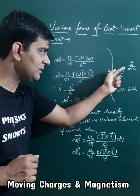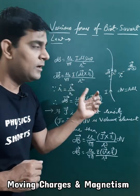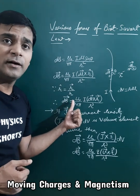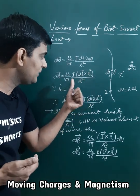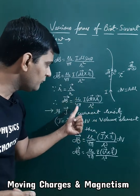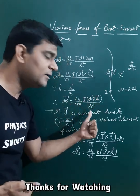r_cap is the unit vector in the direction of this r vector. Where this unit vector is what? It is the vector r upon magnitude of r. When we convert this r_cap in terms of r then in denominator we will get r³. So, expression will be mu_0 upon 4π idl cross vector r upon r³.